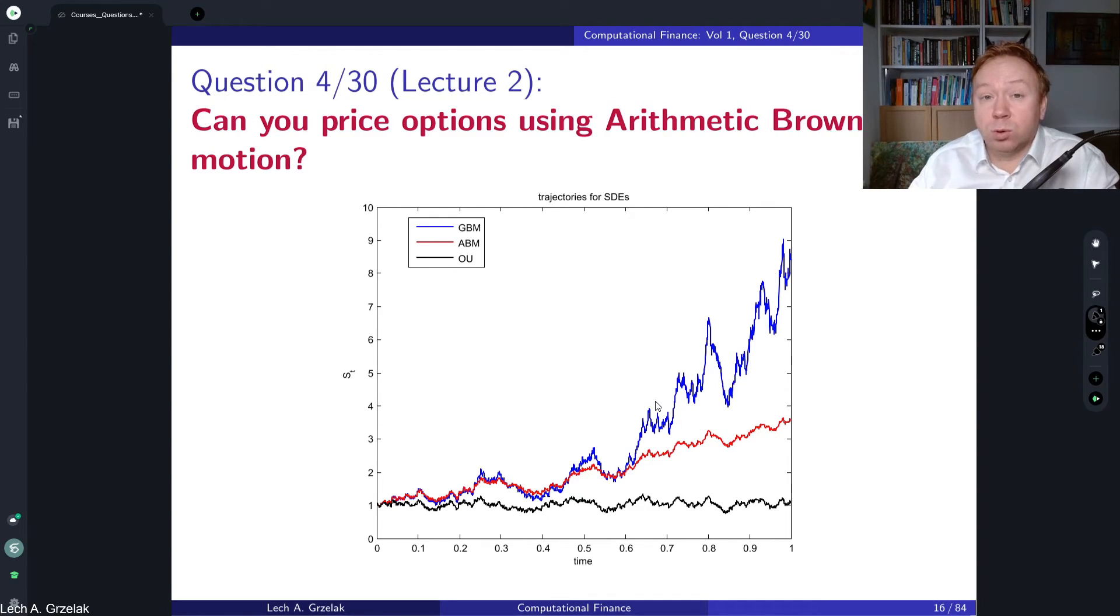So long story short, it is possible to price options using arithmetic Brownian motion, but it may not make sense. Everything depends on what is the underlying assumption of your asset. Is the dynamics of your process properly chosen? Does it really reflect the physical properties of the market? And that's the key element here. I hope it explains. See you next time.